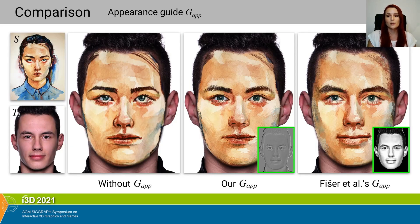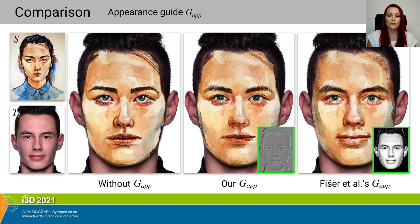To test the quality of our approximation of the appearance guide, we plugged the complex appearance guide of Fisher et al. into our pipeline — the result is on the right. We also generated the result with no appearance guide, shown on the left. The middle result with our appearance guide is significantly better than the left result and reaches the quality of the right result.